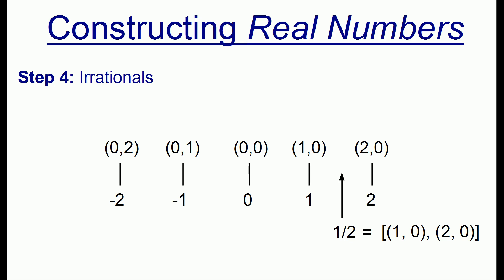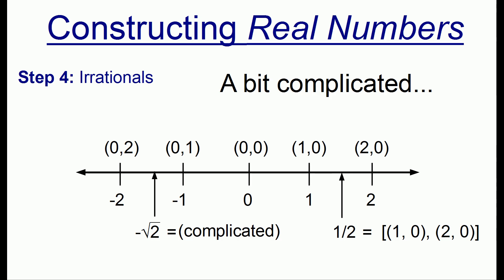Finally, we can complete the real numbers by defining the irrationals. And this is a bit complicated, but let me just tell you, you can define numbers like negative square root of 2 from the sets we've already built up. And that's how you build up the real numbers.